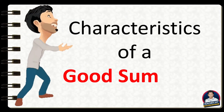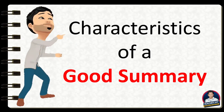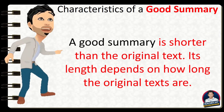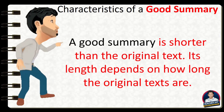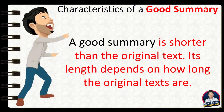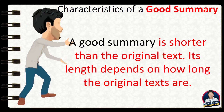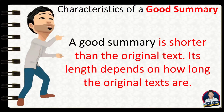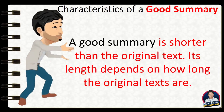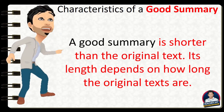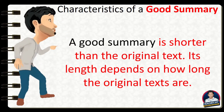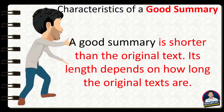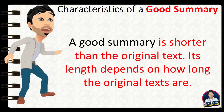Characteristics of a Good Summary. A good summary is shorter than the original text. Its length depends on how long the original text is. It should be long enough to cover the most important information. A rule of thumb is that a summary should be one-fourth to one-third of the original text.